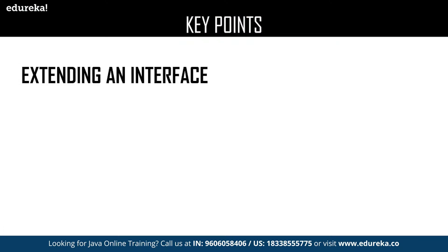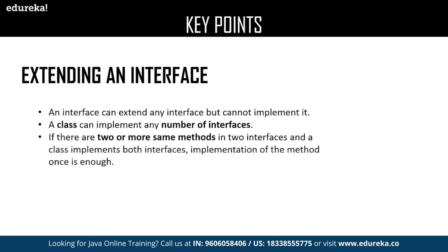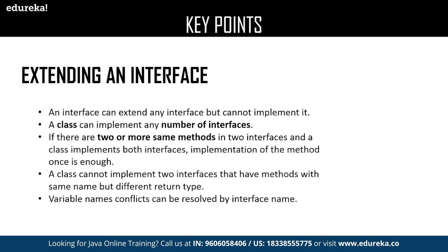The next key point is extending an interface — an interface can extend any number of interfaces but cannot implement them, whereas a class can implement any number of interfaces. If two or more interfaces have the same methods, then the class can implement all the interfaces but one single method is enough to perform the operation. A class cannot implement two interfaces that have methods with the same name but different return type. The major advantage of using an interface is that variable name conflicts can be easily resolved by using the interface name.